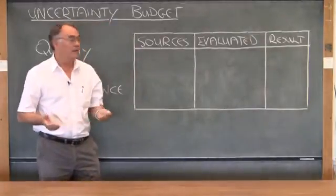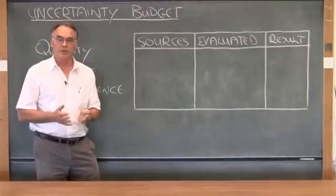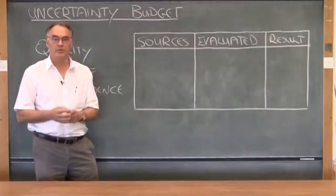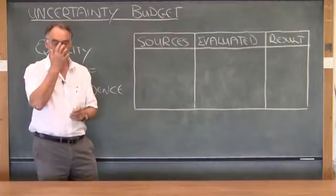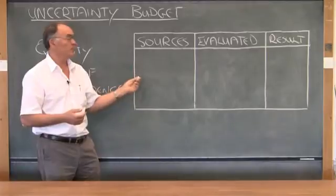Now of course, in any experiment there are many sources of uncertainty, but fortunately there are techniques that have been evolved to help us work our way through that. And this is where the type A and type B analysis of uncertainty will help us.